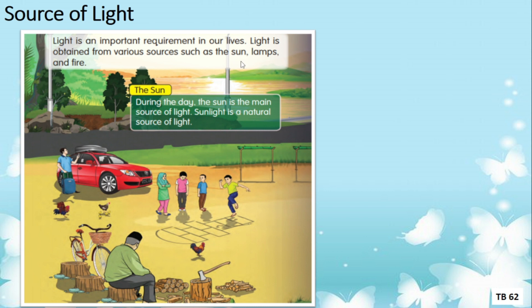I want you to remember these three sources of light: the sun, lamps, and fire. Let us read about the sun — during the day, the sun is the main source of light. Sunlight is a natural source of light. The sun is very important to us — not only for humans, but also for animals and plants.